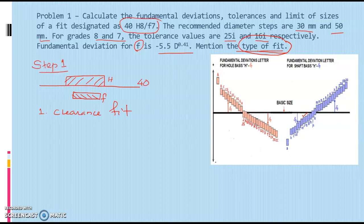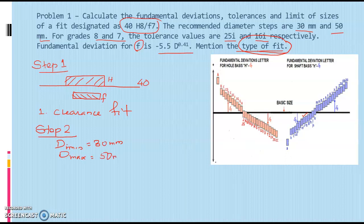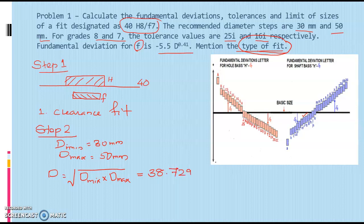Step 2 is to determine the value of D. We know that D minimum is 30 mm and D maximum is 50 mm. D is calculated as the geometric mean, that is the square root of D minimum times D maximum. So the value is the square root of 30 times 50, which gives 38.729 mm.